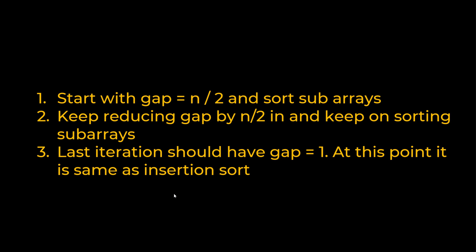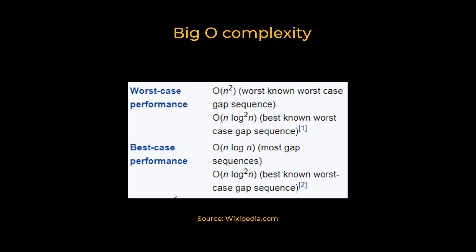The general algorithm starts with n/2 as the gap, sorts sub-arrays, then reduces the gap by 2 each iteration - n/2, then n/4, then n/8 - until gap equals 1. The time complexity in the worst case is O(n squared). The best-known worst-case gap sequence gives O(n log squared n) performance. Here are some statistics on best-case performance taken from Wikipedia.